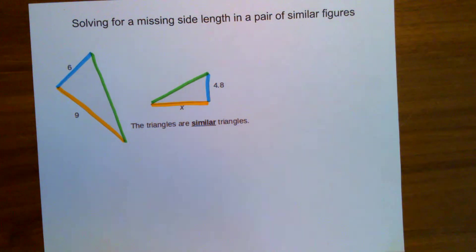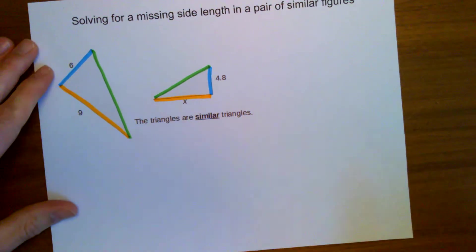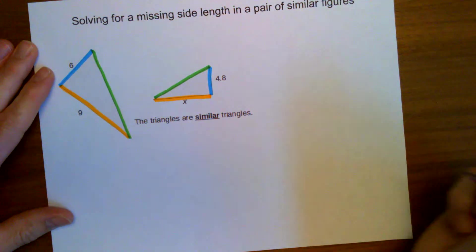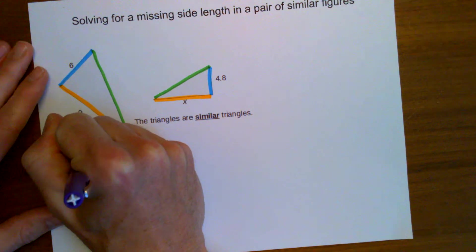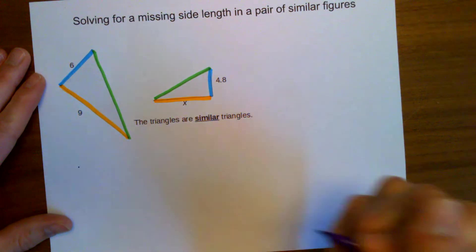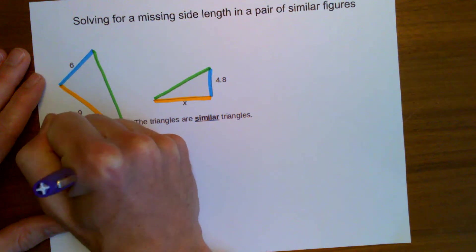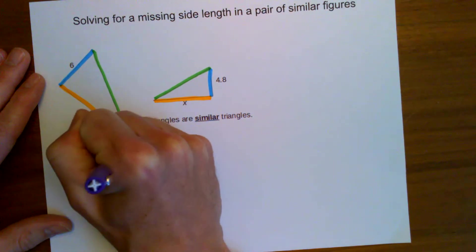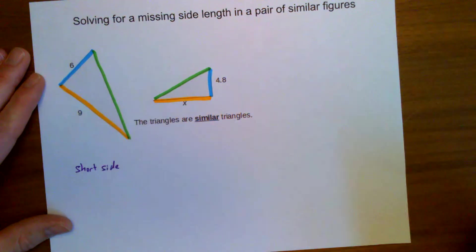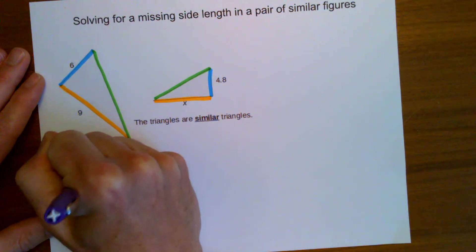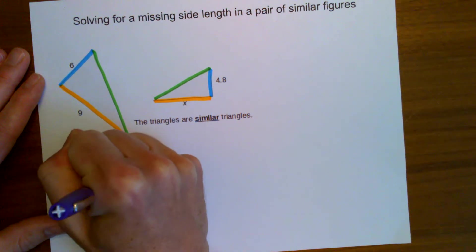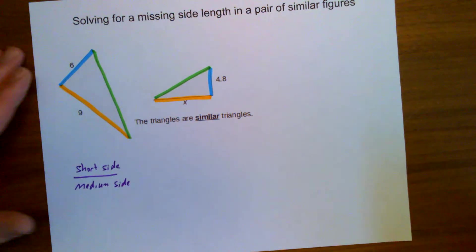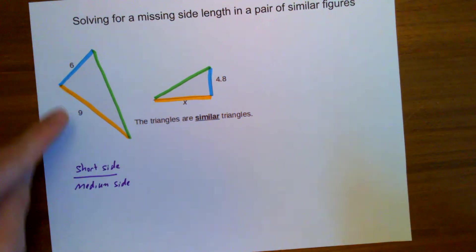Here's how I'm going to write my ratio for this one. There are a couple ways you can do it, but I'm going to write the ratios this way. I'm going to write my ratio as the ratio of the short side to the medium side.